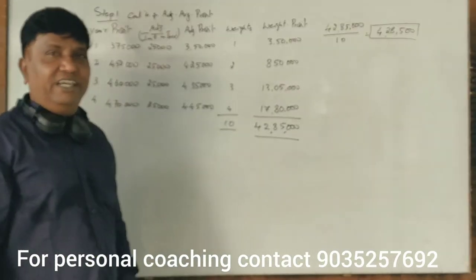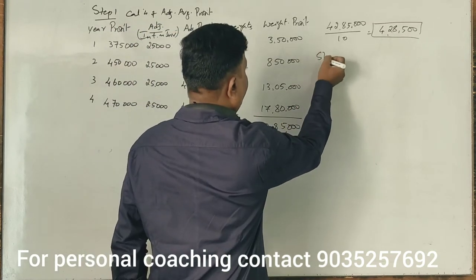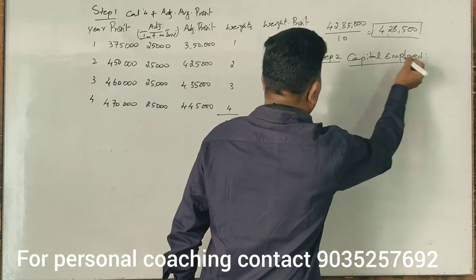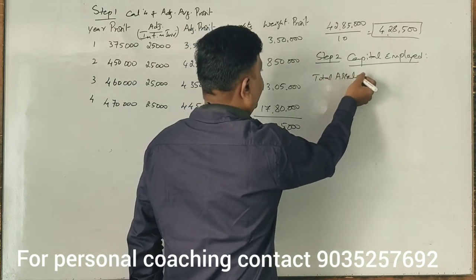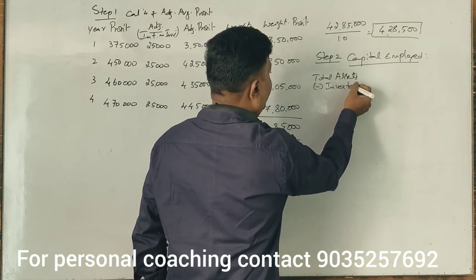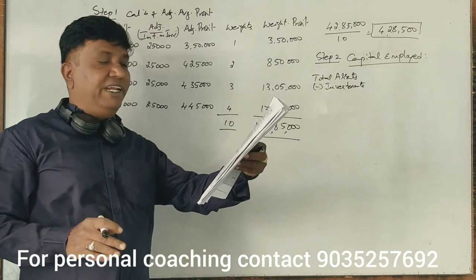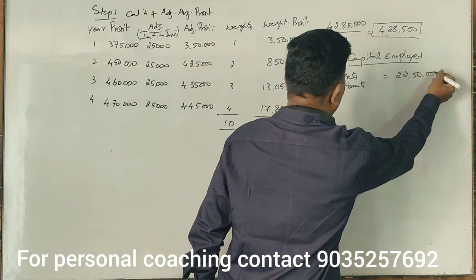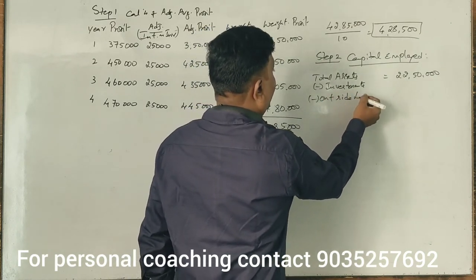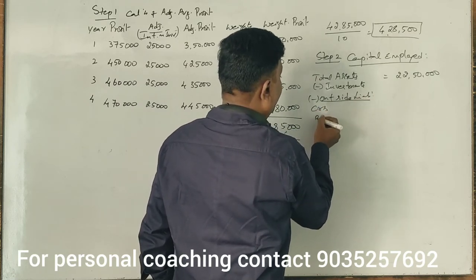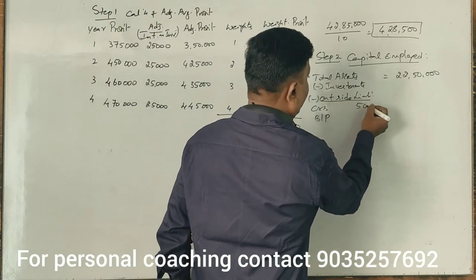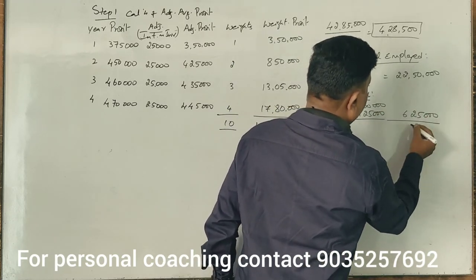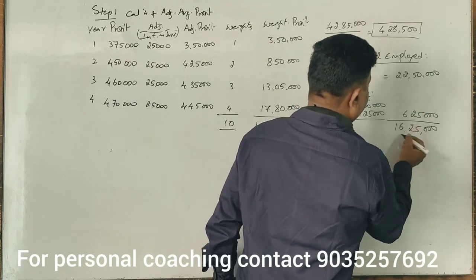Step 2: Capital employed. Total assets from balance sheet = ₹25,00,000, minus investments ₹2,50,000 = ₹22,50,000. Less outside liabilities: creditors ₹5,00,000, bills payable ₹1,25,000, total outside liabilities = ₹6,25,000. Capital employed = ₹22,50,000 − ₹6,25,000 = ₹16,25,000.